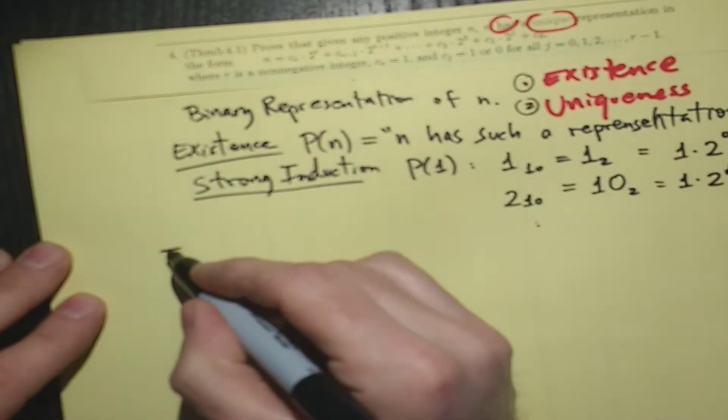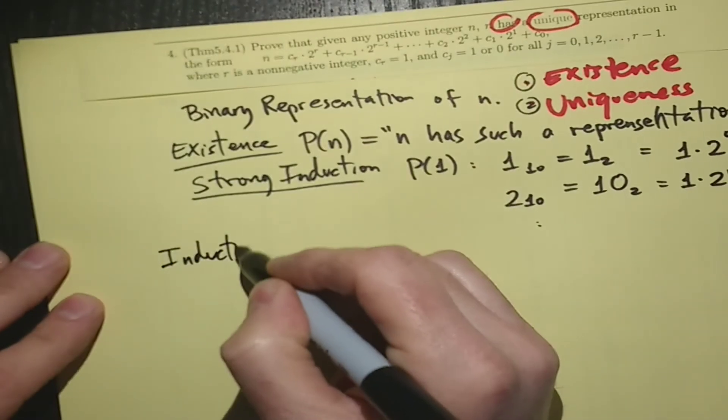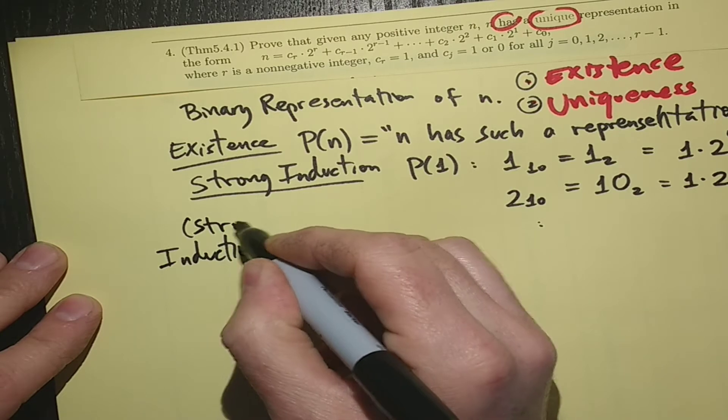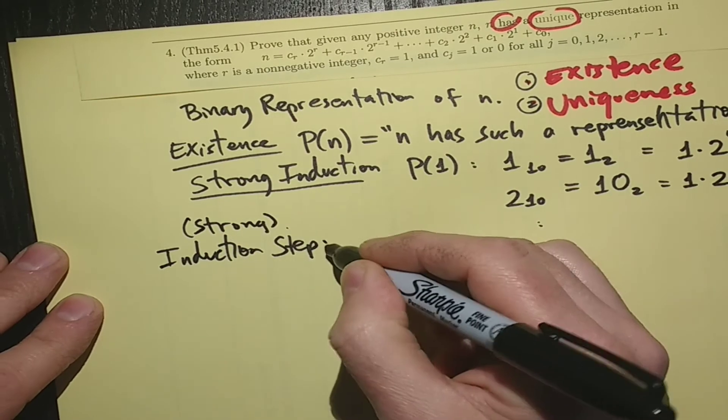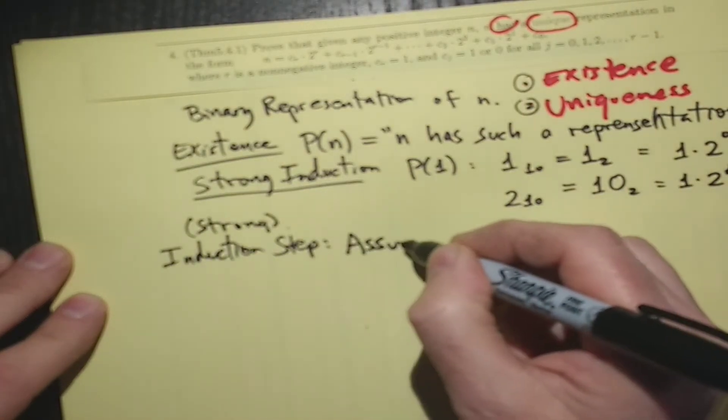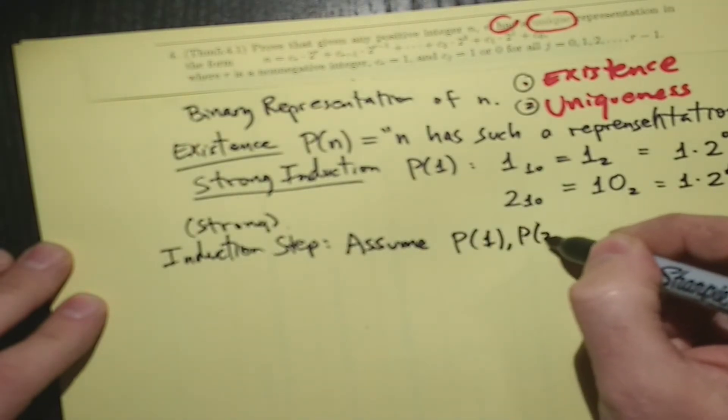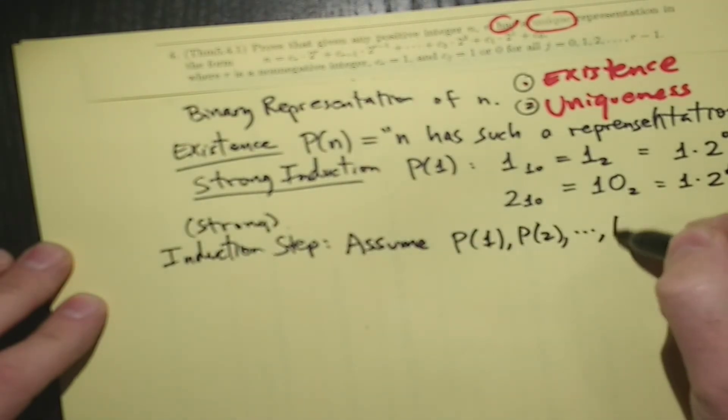But let's do the induction step. And of course, it's going to be a strong induction step. So we're going to assume that P(1), P(2), all the way up to P(k) are true.